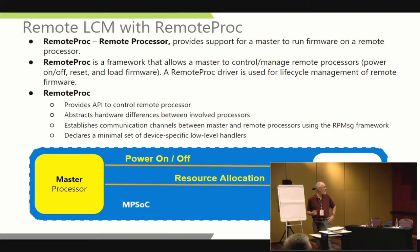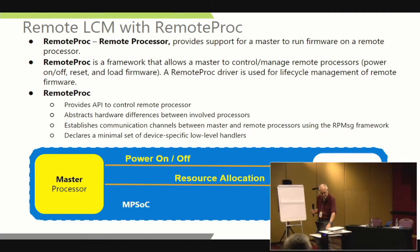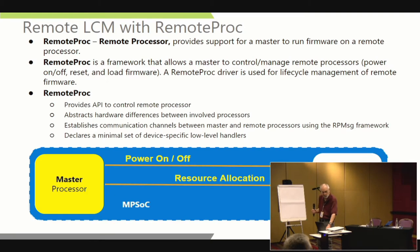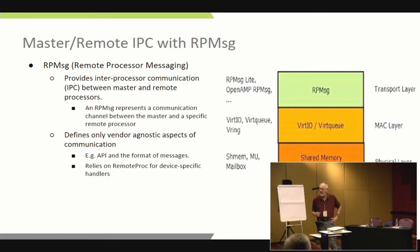Remote Proc provides the APIs: hardware configuration, power on, power off, resource allocation — so we can actually tell the remote processor what resources it has access to and configure it accordingly. This is done over VirtIO, so the messages run as VirtIO devices — providing only the vendor-agnostic forms of messaging at this level, with Remote Proc for device-specific device handling and lib metal underneath.